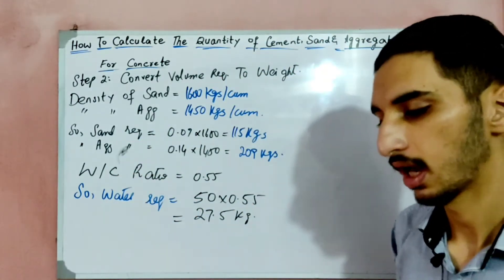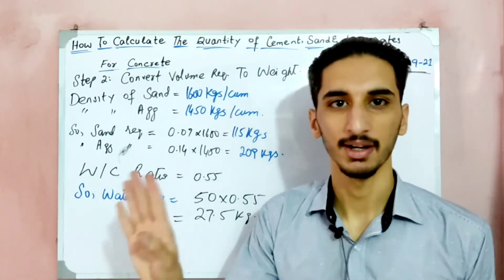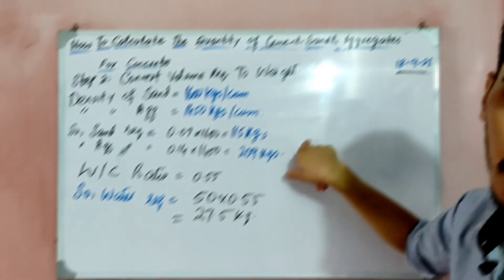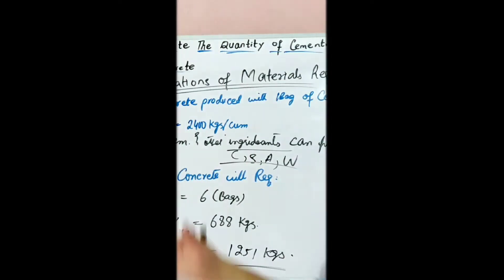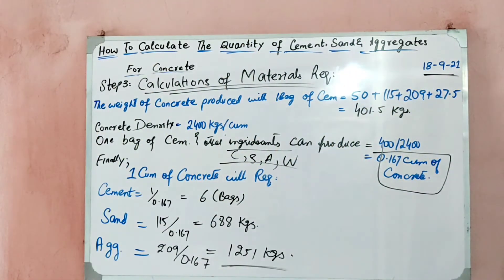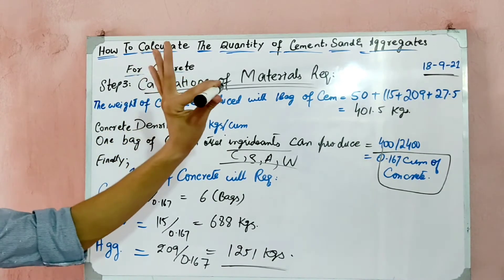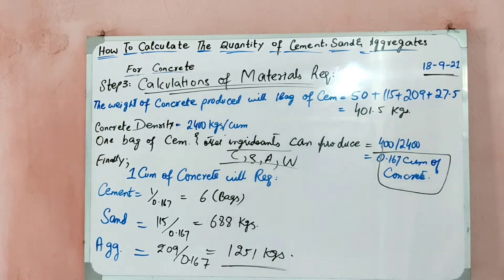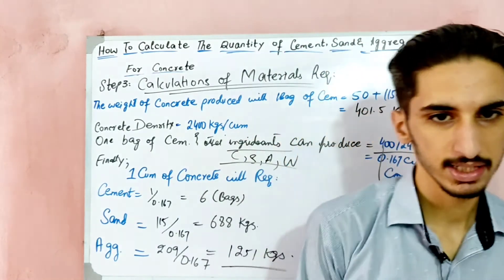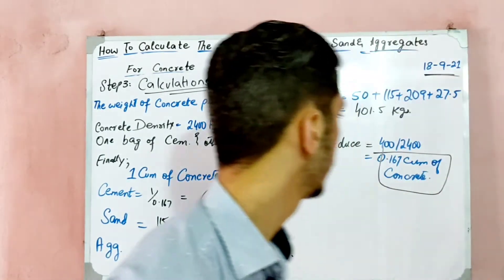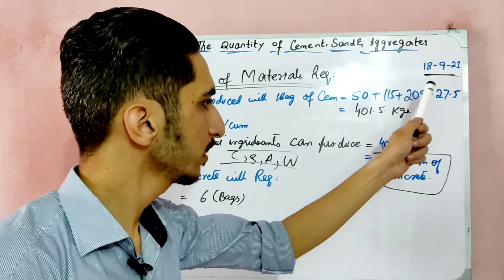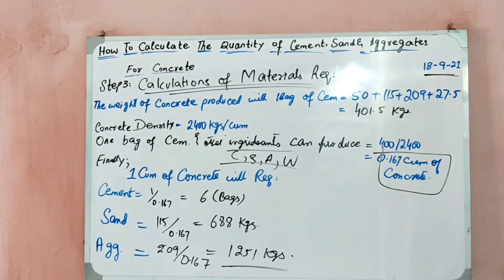In step 2 we multiplied the volume by the density. Now for step 3, we calculate the weight of concrete produced with one bag of cement. We add: 50 kg cement plus sand weight plus aggregate weight plus water weight, which equals 401.5 kg. So one bag of cement and other ingredients produces 401.5 kg of concrete mixture.